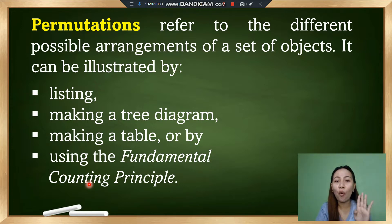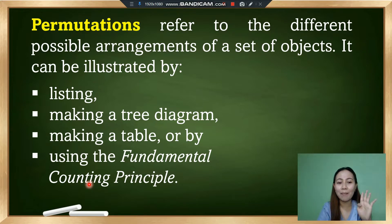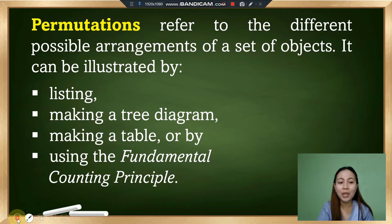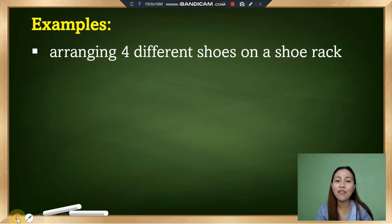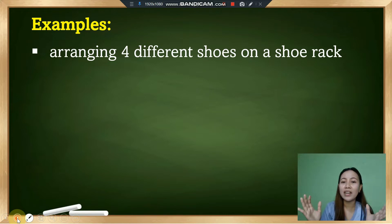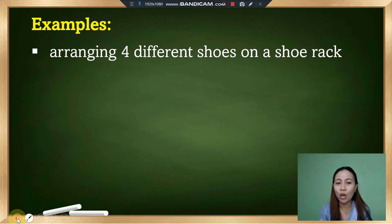Do not forget the four methods of illustrating permutation: listing, making a tree diagram, making a table, or using the fundamental counting principle. To help you understand permutation, here is an example: arranging four different shoes on a shoe rack. How will you arrange those shoes? That is an example of permutation — the different arrangements of shoes on a shoe rack.